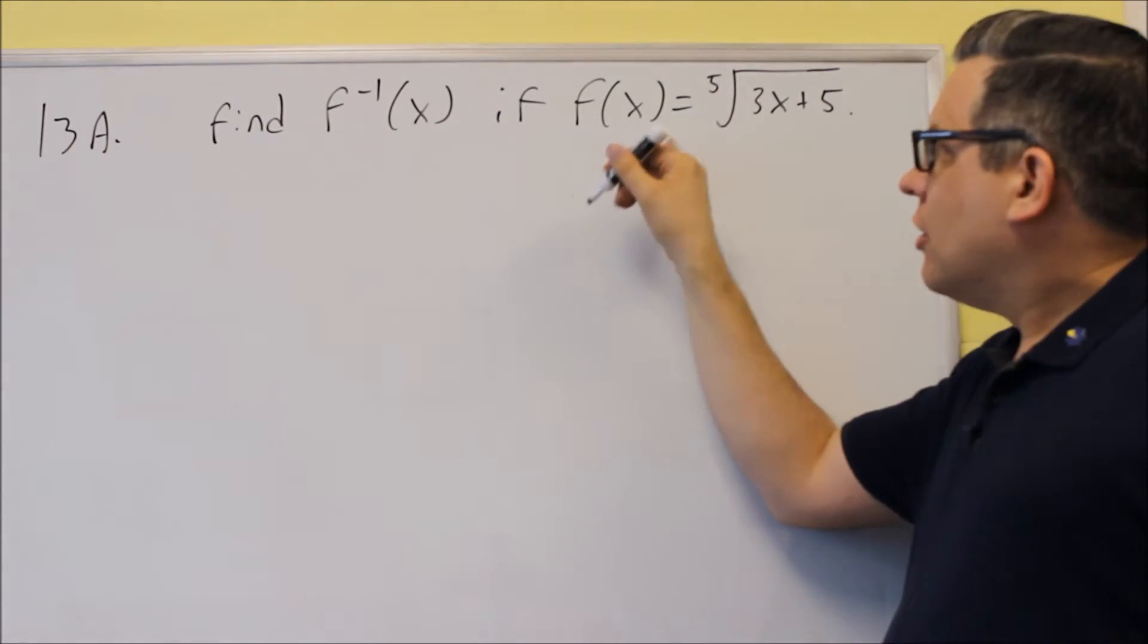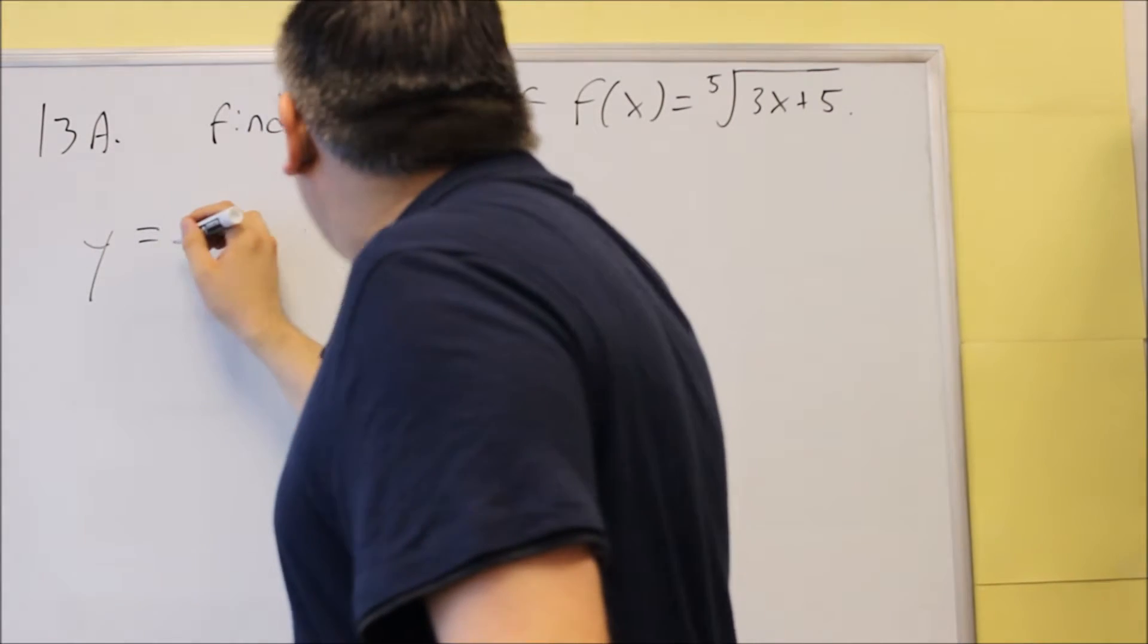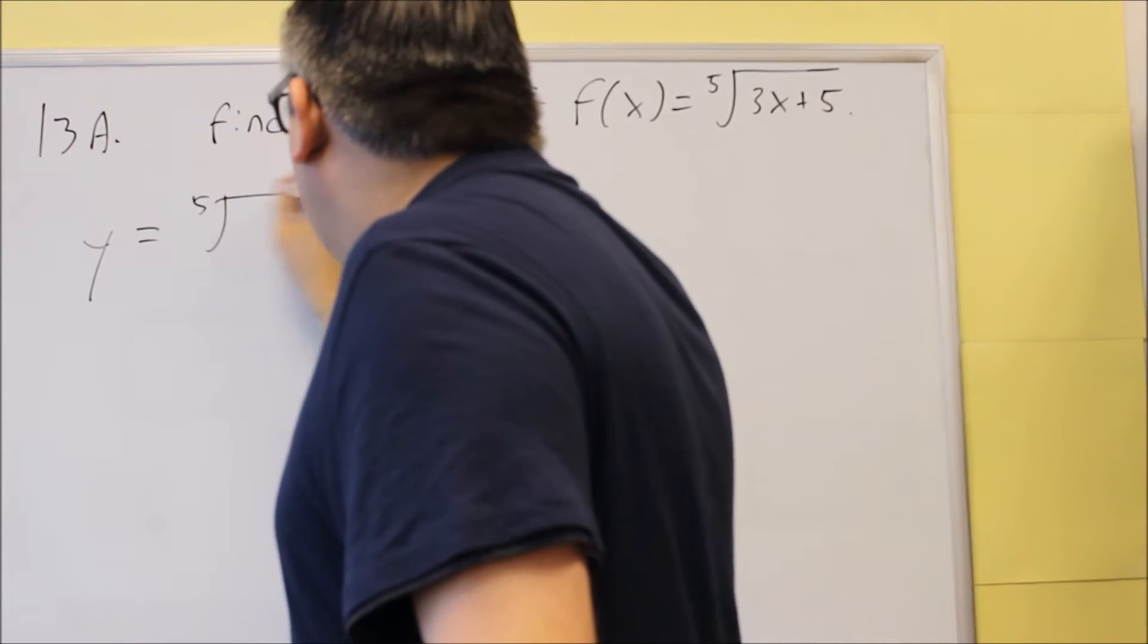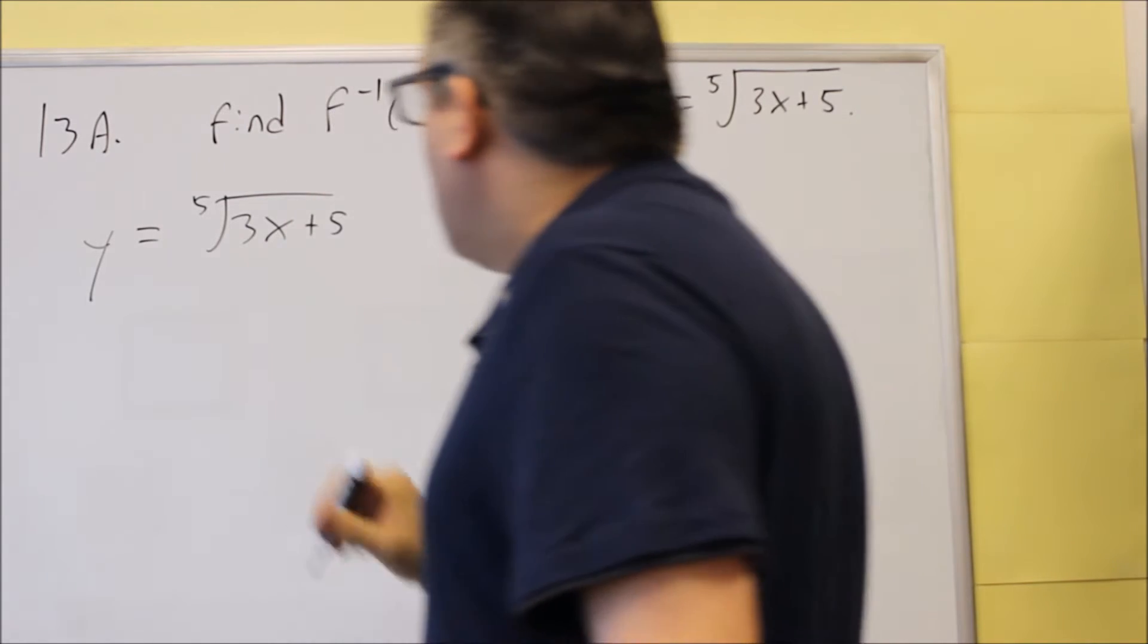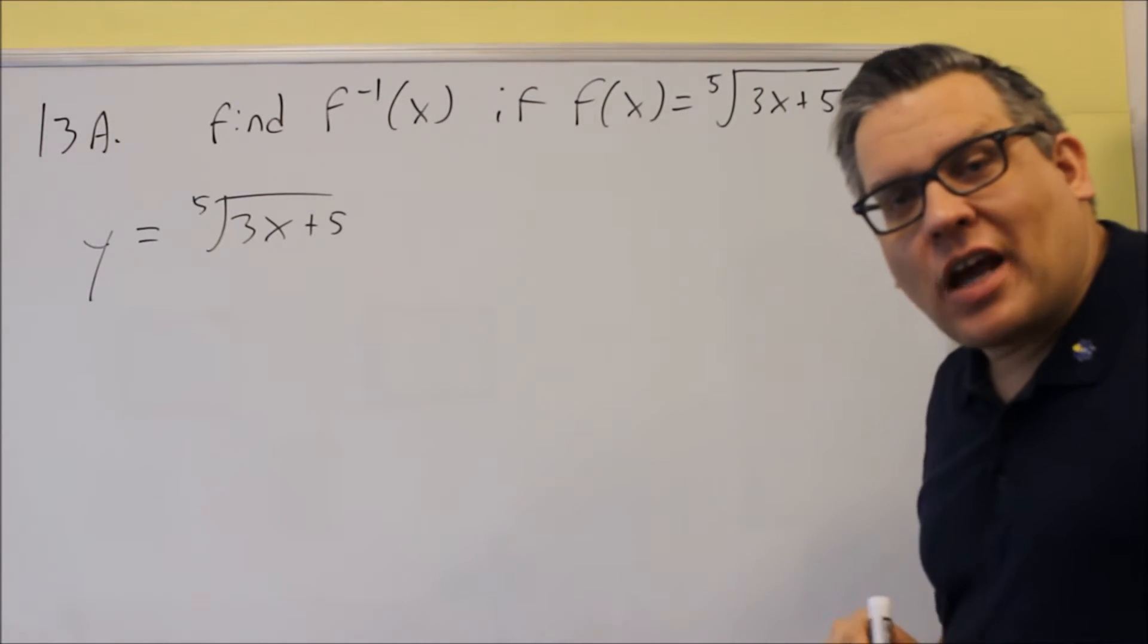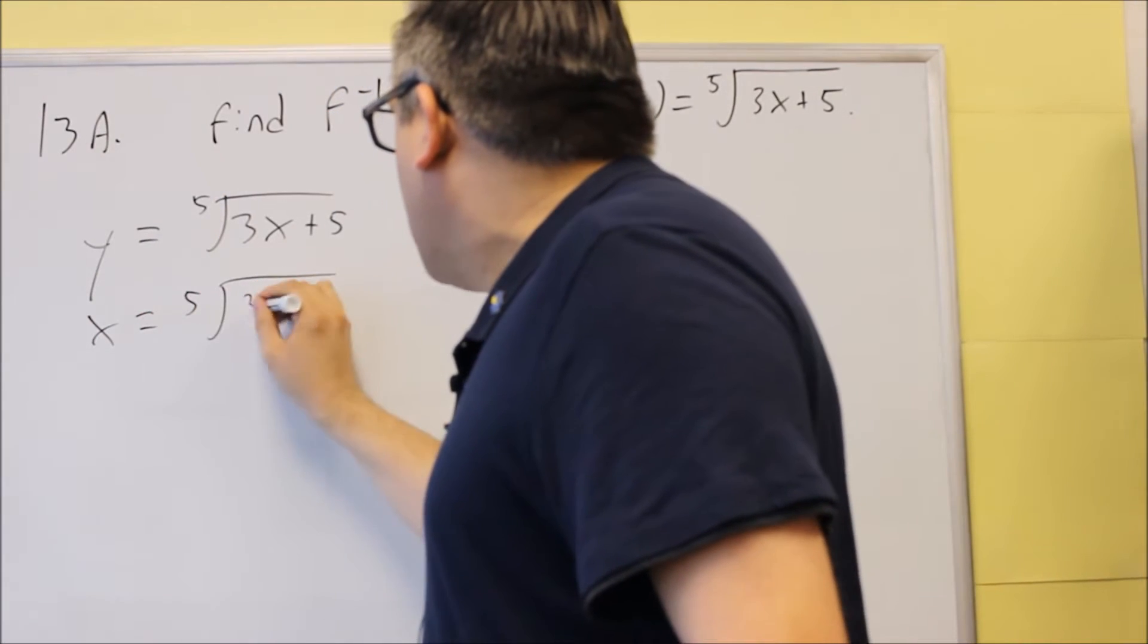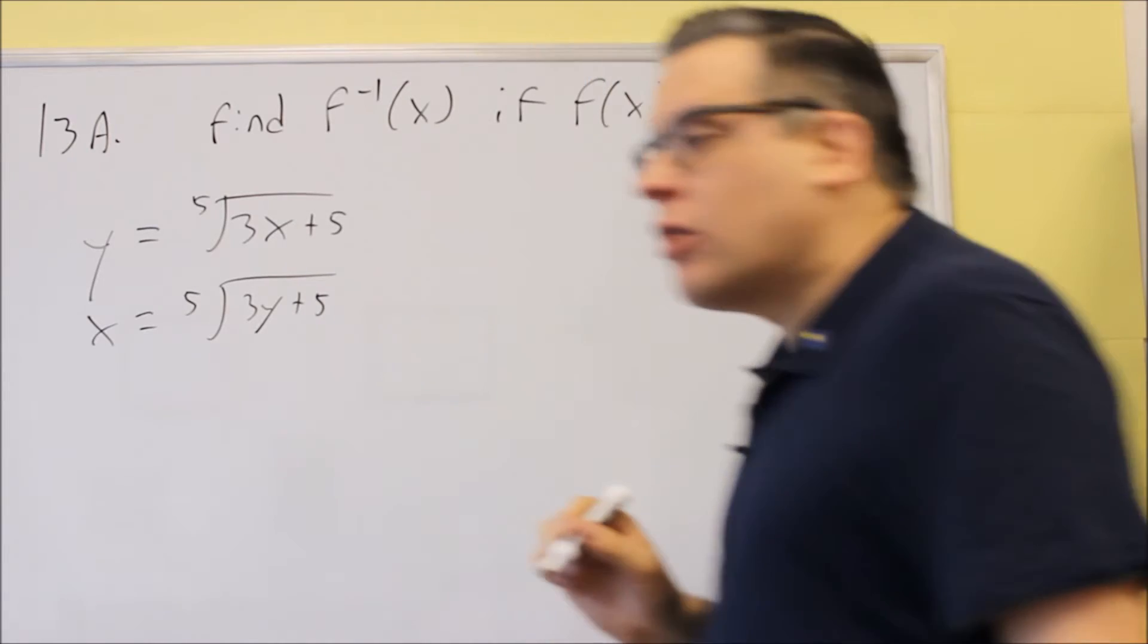The first step would be replace the f of x with a y. So I have y equals fifth root of 3x plus 5. The next step when you're finding the inverse is you need to switch the x and the y. So I'll put an x here and a y inside.